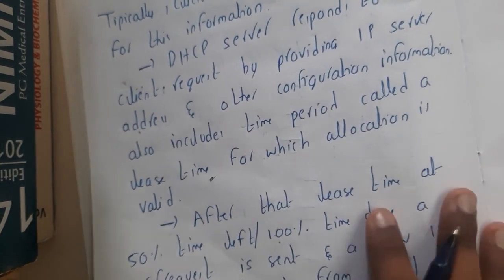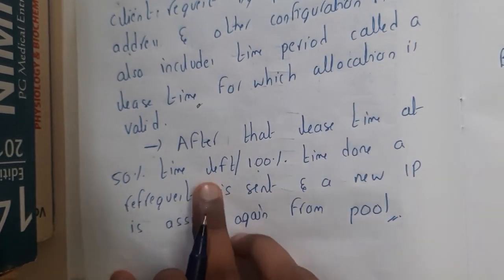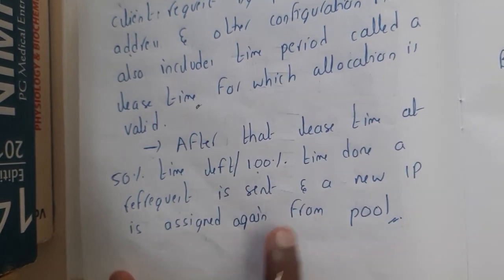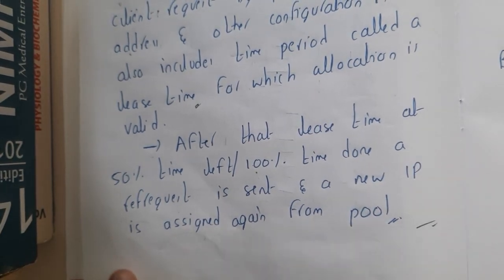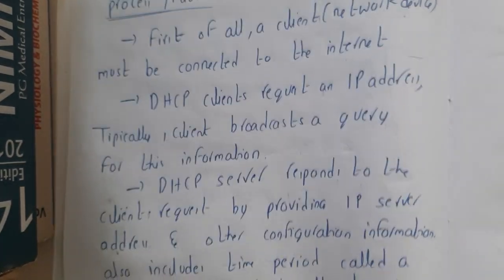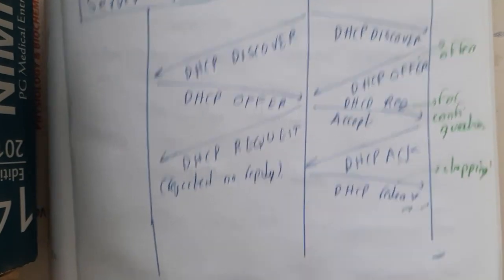The allocation is valid for that period. After that, you need to re-get the IP address. After the lease time - at 50 percent time left or 100 percent time left - you will be requesting for another IP from the pool and it will be assigned. The working you can directly write from the flow also.